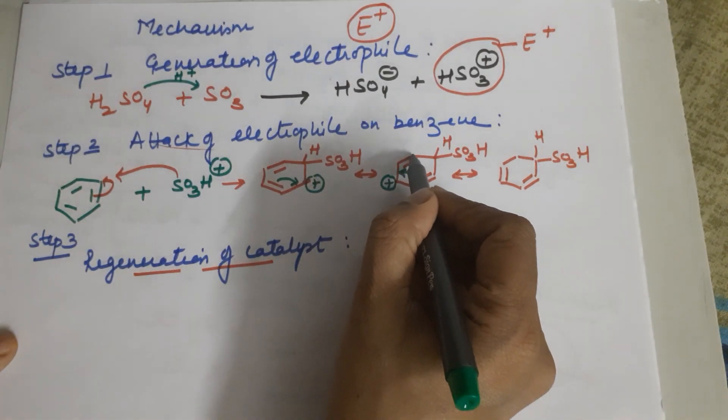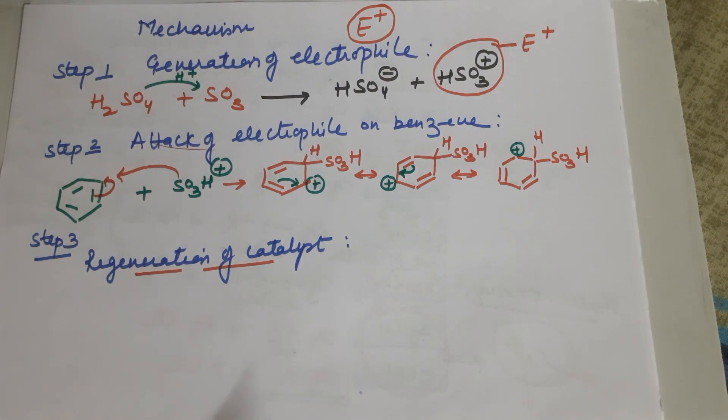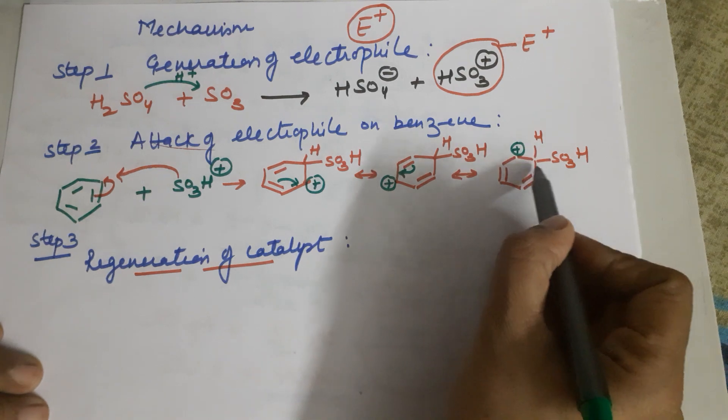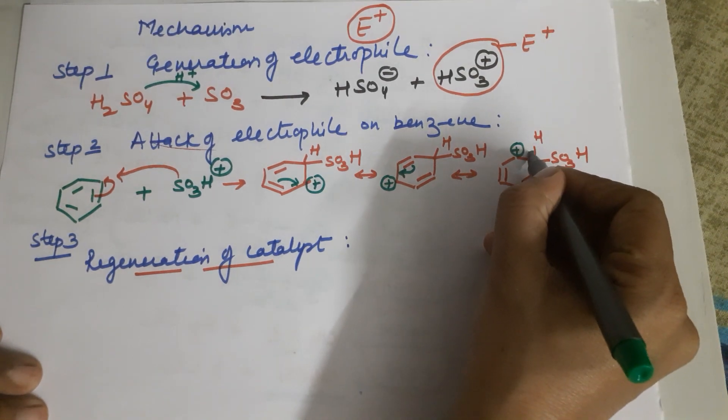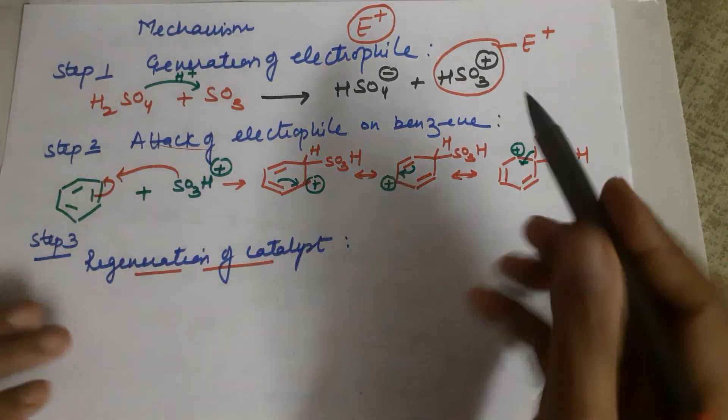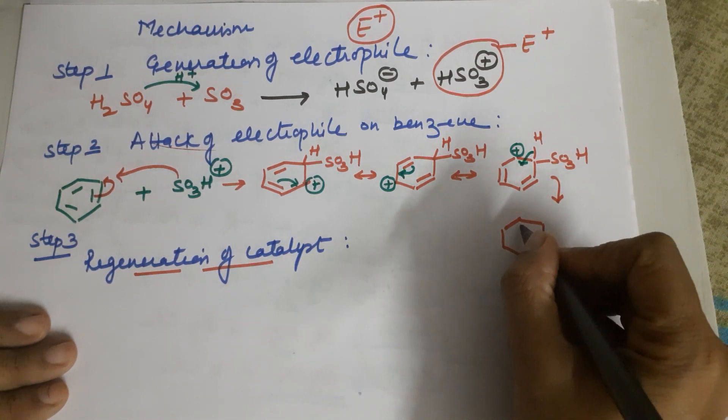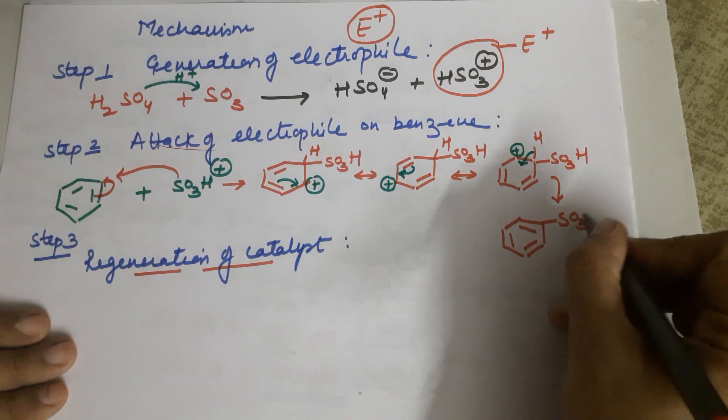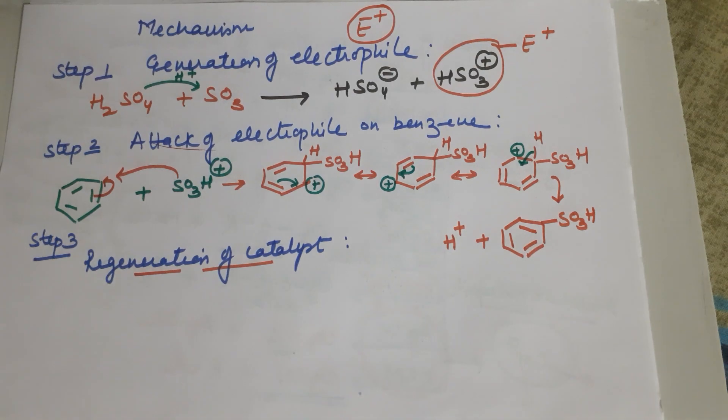This gets a positive charge. Now to neutralize itself it will pull electron from here. Here there is no pi electron, so the electron pair here comes. You end up in a benzene ring with bonds here, SO3H, and your H+ is lost.